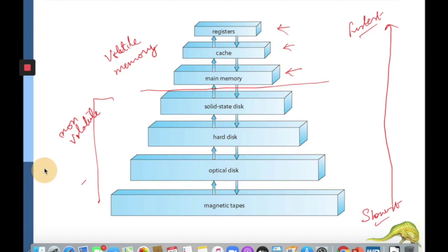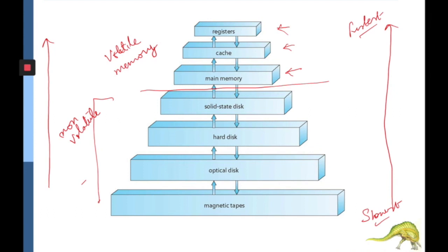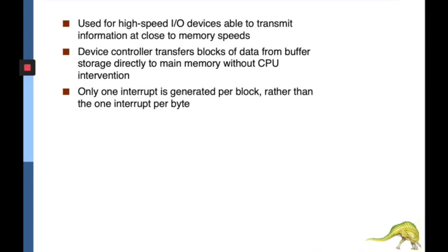As we move up the memory hierarchy from the bottom, the speed of the memories increases — the lowest is slowest and the highest is fastest, meaning access time decreases as we move up. Another difference is that the size also decreases as we move up — the lowest is largest and the highest is smallest. The top three levels are mostly semiconductor-based memories.